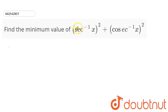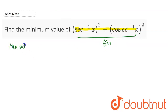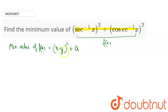So here we have to find the minimum value of this expression. So let this be equal to f(x). The minimum value of f(x) is given by the form x minus y whole squared plus a. If I can write this equation in this form, then a will represent our minimum value.